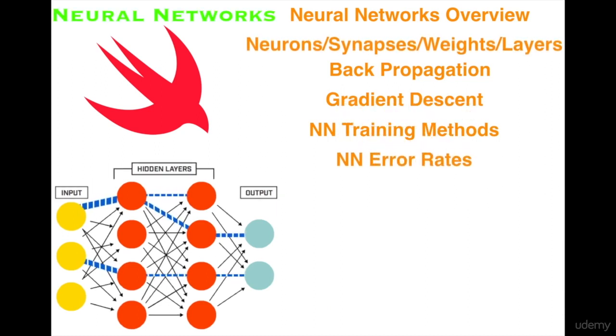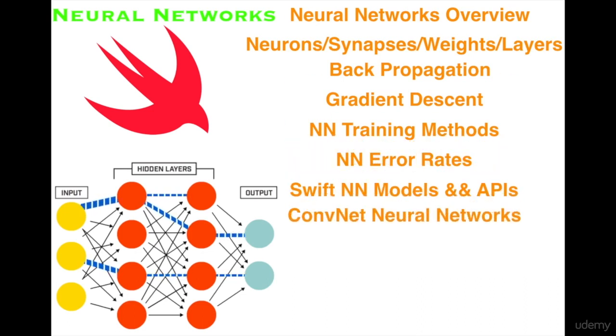Neural network error rates. Swift neural network models and APIs. Accelerate and CoreML.